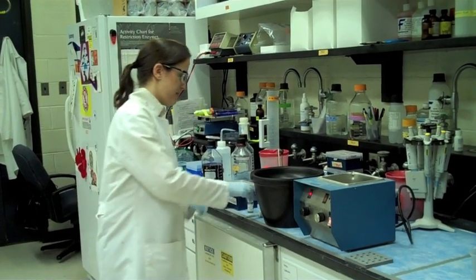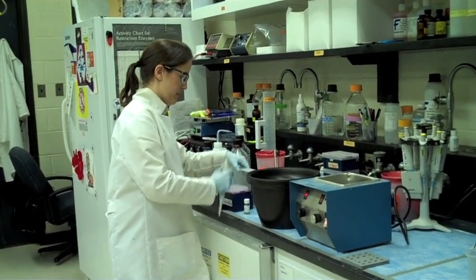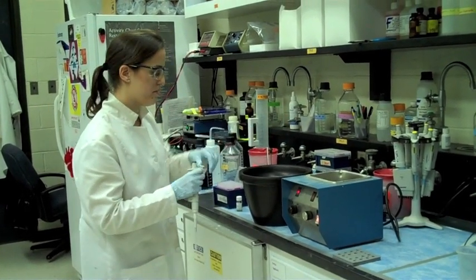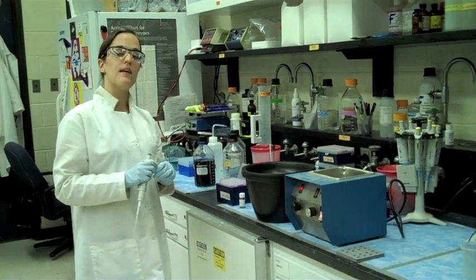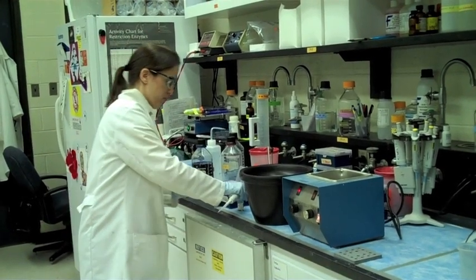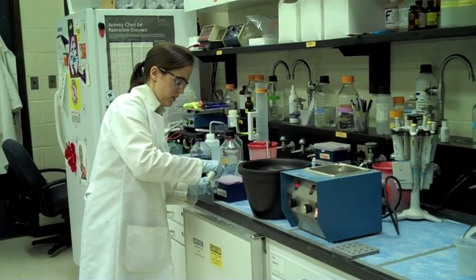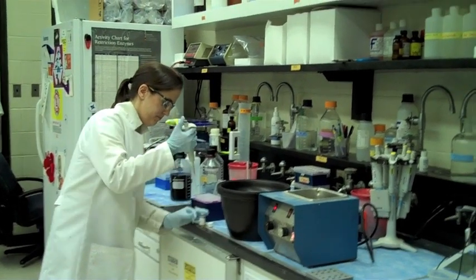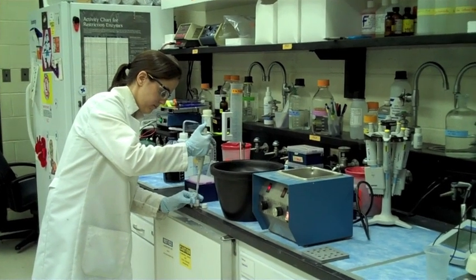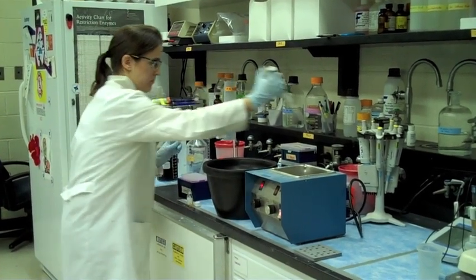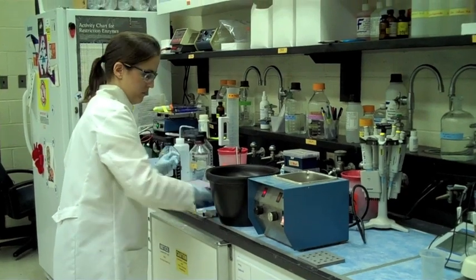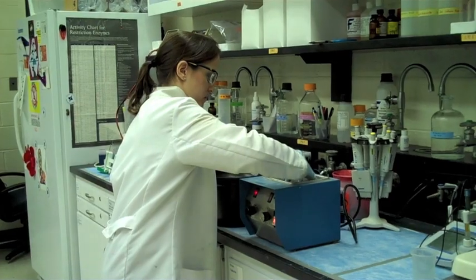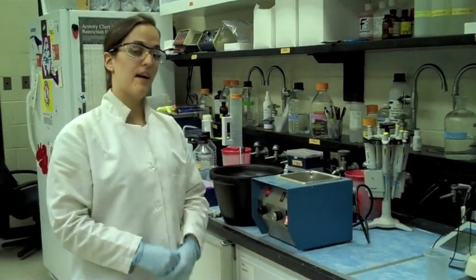Our cells have been chilling on ice for a couple minutes now. The next step is to put our cells at 37 degrees C for an hour to grow. They need food to grow, and our growth media is right here. We're going to add it into our cell DNA mixture. And now we have an hour to wait.